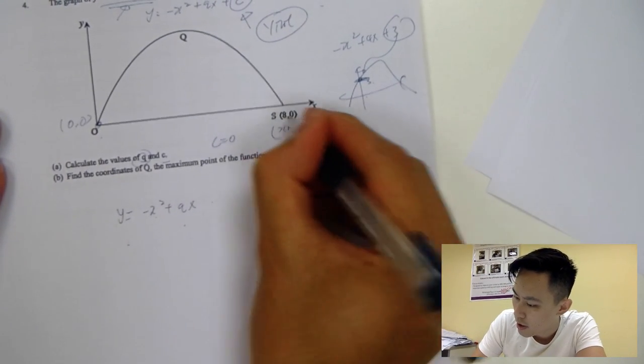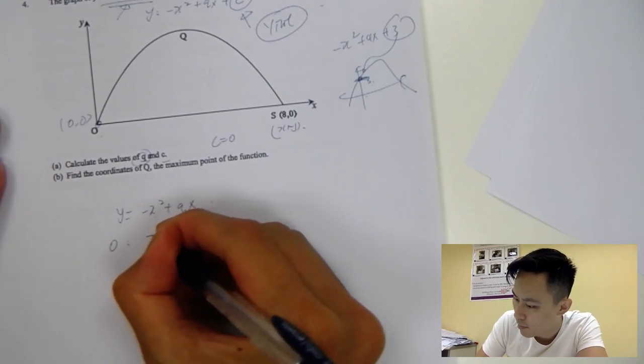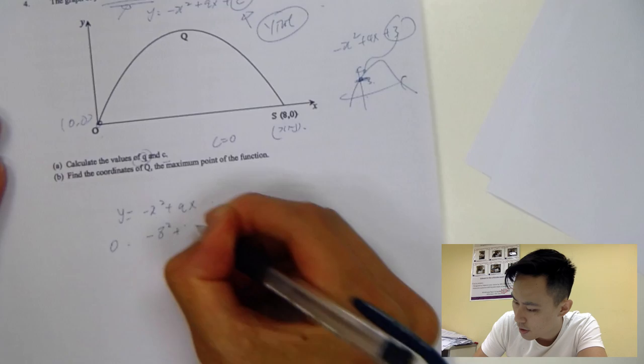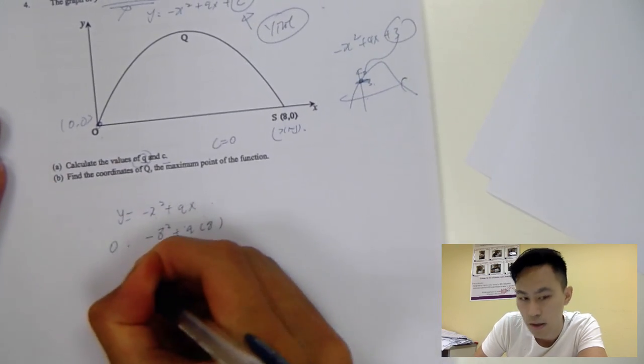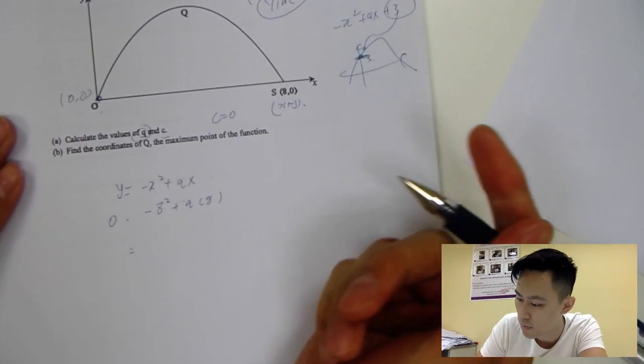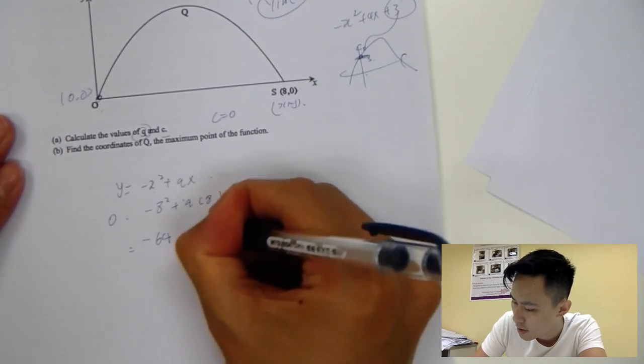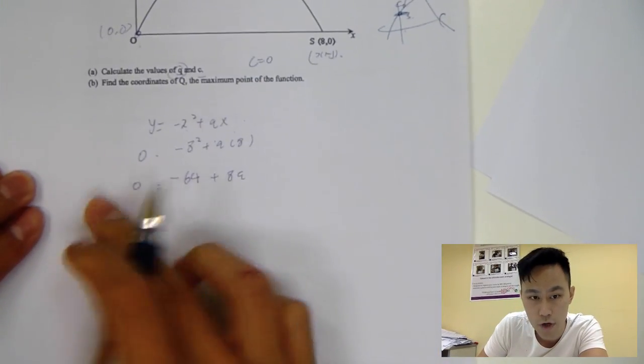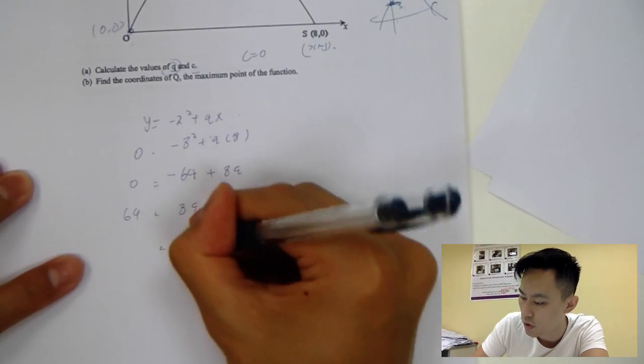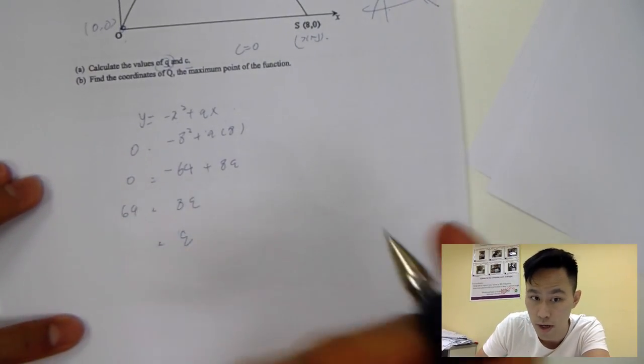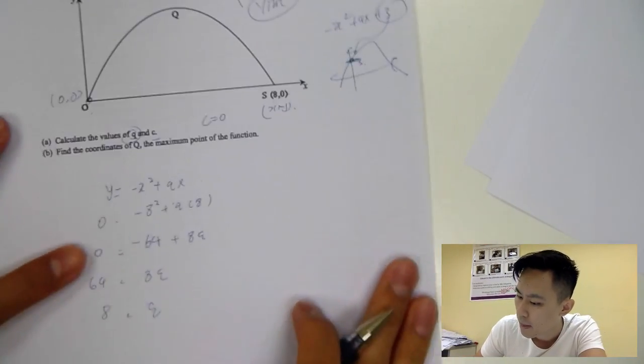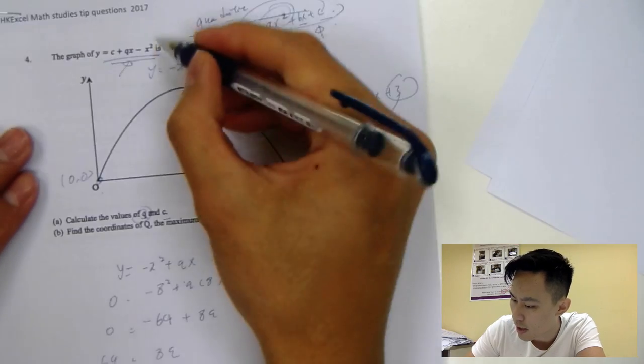So for 0 is y: minus 8 squared plus q times 8, right? So 8 squared would be 64. So negative 64, plus 8q equal to 0, and then move it over 64, 8q. Of course, you can use GDC. 64 over 8, that would be just 8. So we got the equation, q is equal to 8.